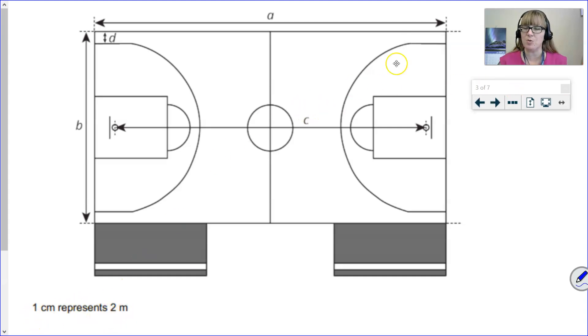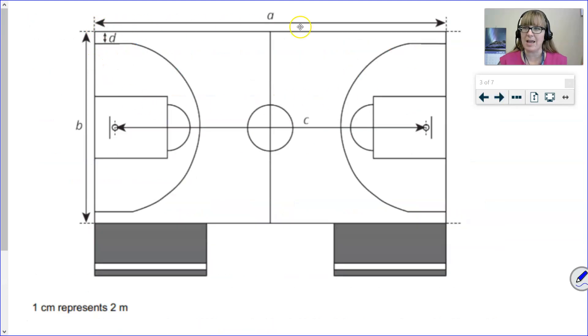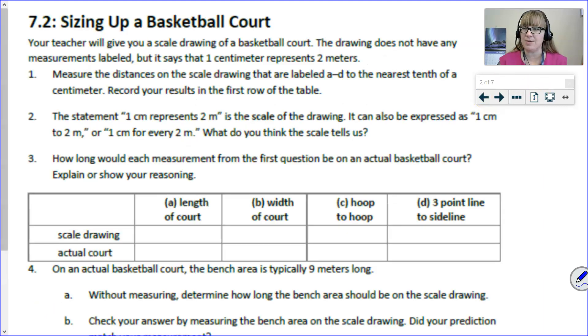The drawing does not have any measurements labeled but it does say that one centimeter represents two meters. What we're going to do is we're going to measure all of the distances A, B, C, and D to the nearest centimeter. Then after we do that we'll pause and come back and figure out what that means for how big that actual basketball court is going to be. I am now going to switch over to the document camera so that I can copy that information down here and fill in this part of the table.